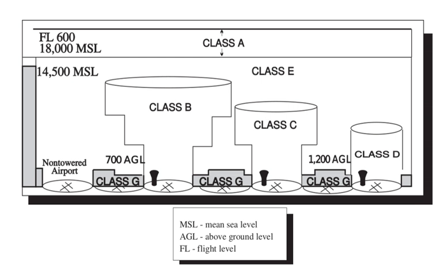In Estonia, airspace is divided into only classes C, D and G. Class C is used for enroute airspace between FL 095 and FL 660. Class D is used for the Amari Center and Tartu TMA and Center during operational hours. Class G is used below FL 095, in the Kurasor, Parnu, and Kardla FIZs, and Tartu TMA and Center outside of operational hours.